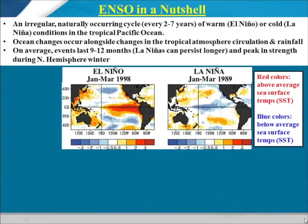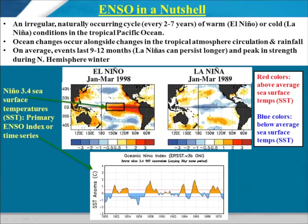So ENSO in a nutshell — the O is for oscillation, but the important thing is to remember that it's not a regular oscillation; it's very irregular. It's a shift between warm El Niño or La Niña, which is cool conditions in the tropical Pacific Ocean. In the figure, we see the 97-98 El Niño with warmer, above-average sea surface temperatures on the left, and in the La Niña case, blues or below-average SSTs. It's naturally occurring, having been around for hundreds of thousands of years.